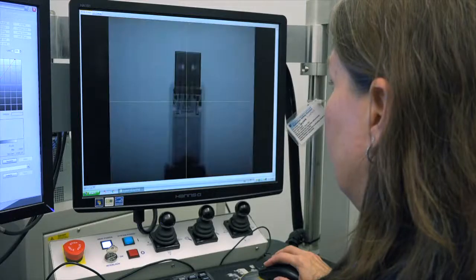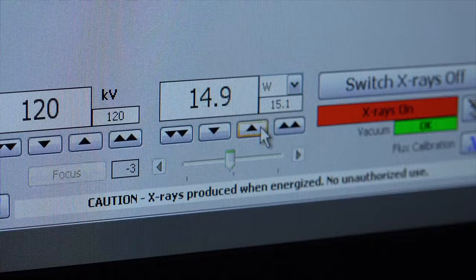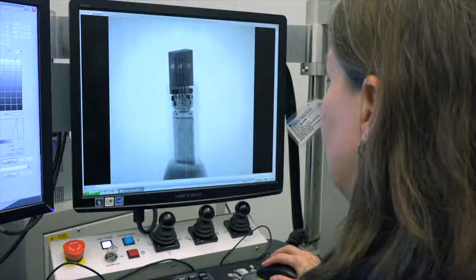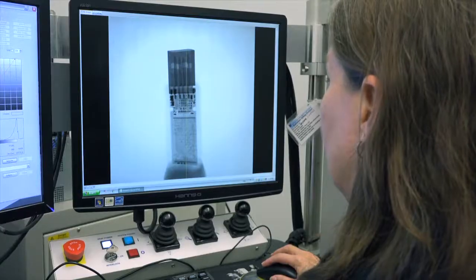Once we have a sample positioned on the stage, we can go into the software to adjust the x-ray energy, the exposure time, and the sensitivity of the signal to get the best image possible. Thank you for joining me for this video on the basics of MicroCT imaging.